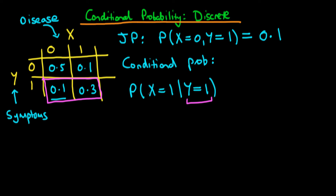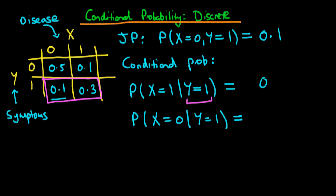The idea is that we want to work out the probability that X equals one given that Y equals one — what's the probability an individual has the disease given they're symptomatic — and also the probability that X equals zero, meaning they don't have the disease given they are symptomatic. Because this now represents the entirety of possible outcomes, these two probabilities have to sum to one. If we naively say the first is 0.3 and the second is 0.1, those sum to 0.4, not 1.